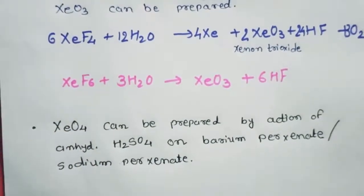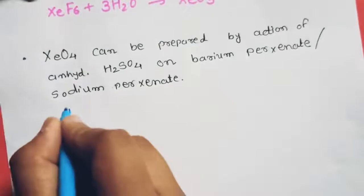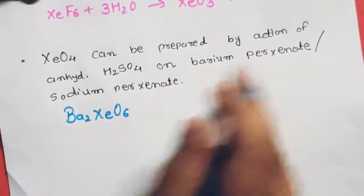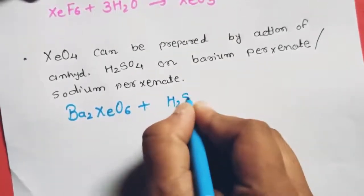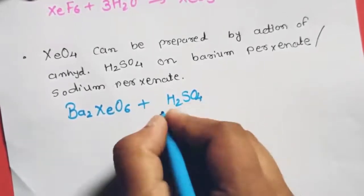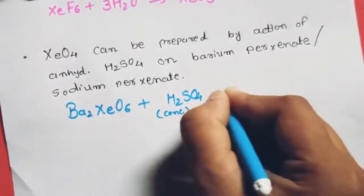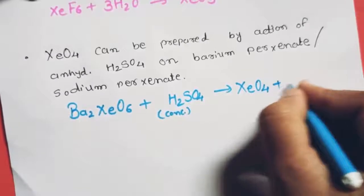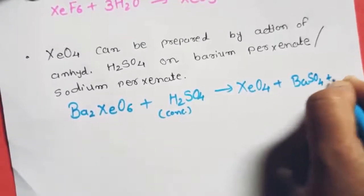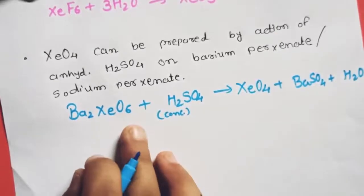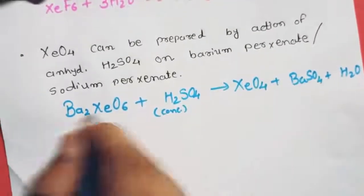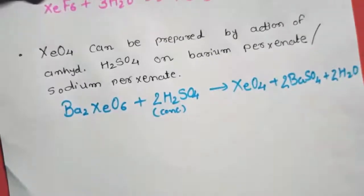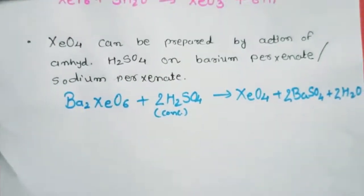For barium perxenate: Ba₂XeO₆ + 2H₂SO₄ (concentrated) → XeO₄ + 2BaSO₄ + 2H₂O. Here Ba₂XeO₆ is barium perxenate, and the XeO₆²⁻ ion is called the perxenate ion.